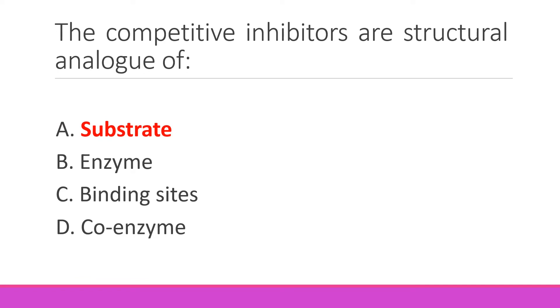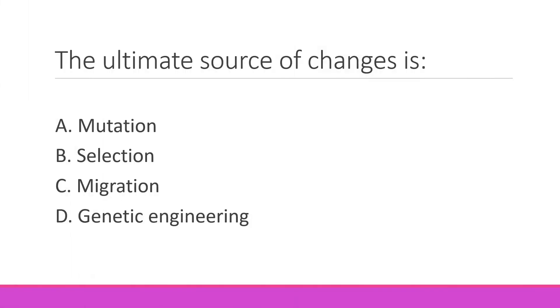The ultimate source of changes is understood from the book — right option alpha — mutation.